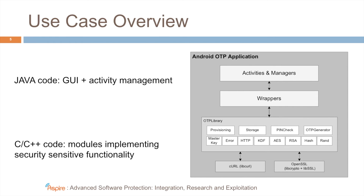As shown on the left, the GUI and the activity management are implemented in Java code. This is an Android Dalvik application, but the lower-level security-sensitive functionality is implemented in a dynamically linked library compiled from C and C++ code, which is packed into the Android APK of the one-time password application.